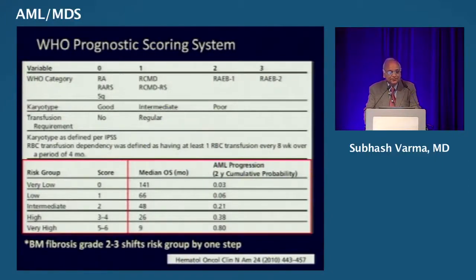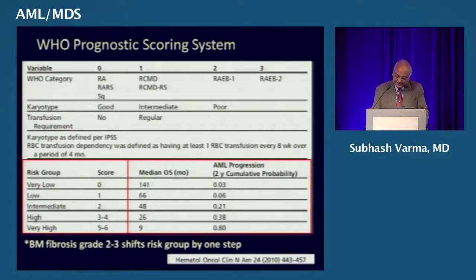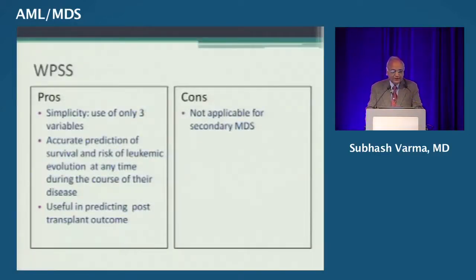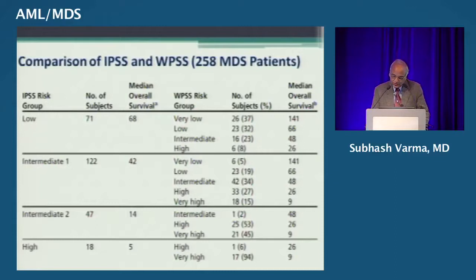The WHO Prognostic Scoring System categorized disease categories into a score of 0 to 3, using karyotype — good, intermediate, and poor — and added transfusion requirement, stratifying people into very low, low, intermediate, high, or very high risk groups. It is a simple prognostic score that predicts risk of leukemic evolution over time. When comparing IPSS and WPSS, even within IPSS groups, WPSS risk groups can identify patients who might do poorly versus those who do better.